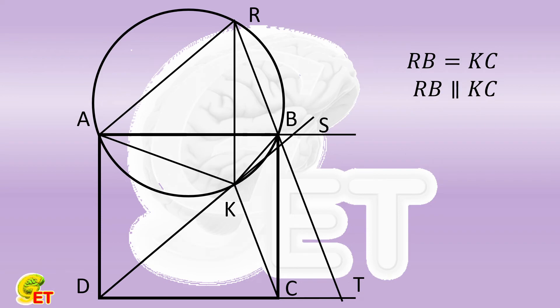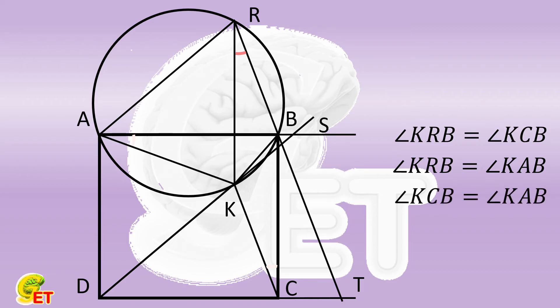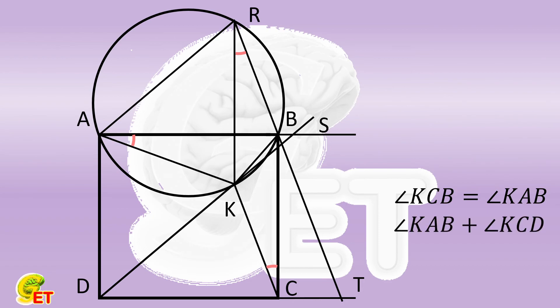The opposite angles KRB and KCB of this parallelogram are therefore equal to each other. Then let's move our attention back to the circumscribed circle. We can get that the inscribed angles KRB and KAB of the same arc are equal to each other. So angle KCB is equal to angle KAB. Therefore angle KAB plus angle KCD is equal to angle KCB plus angle KCD, which is equal to 90 degrees.